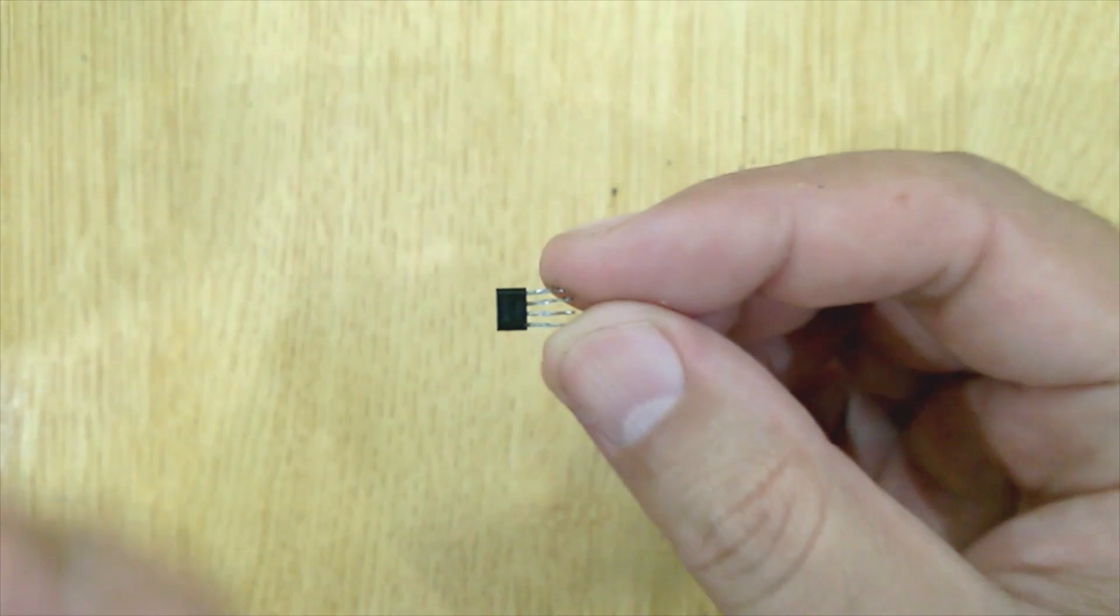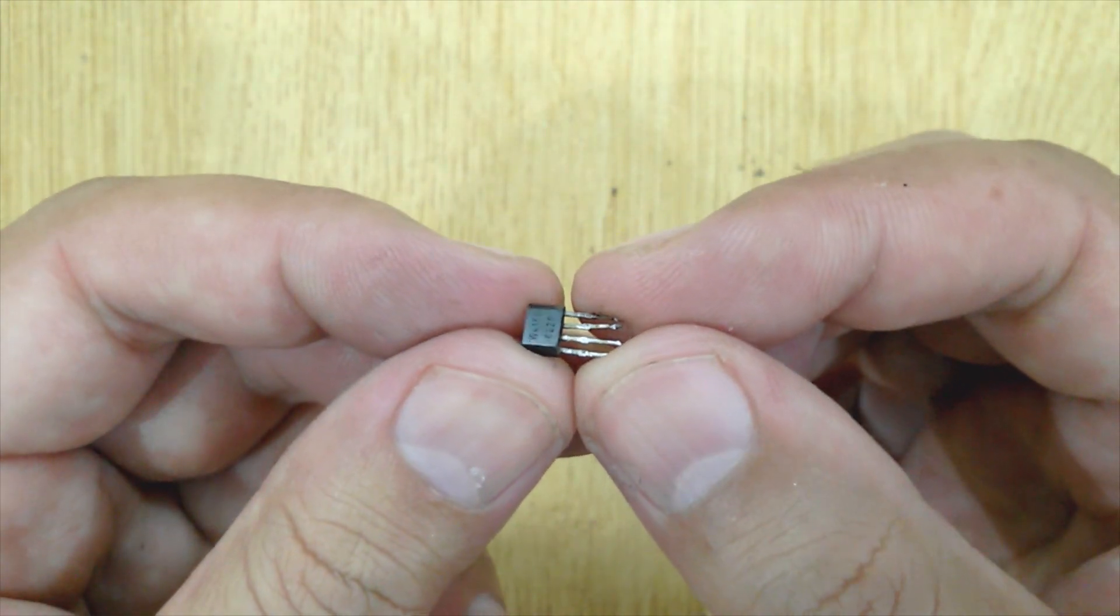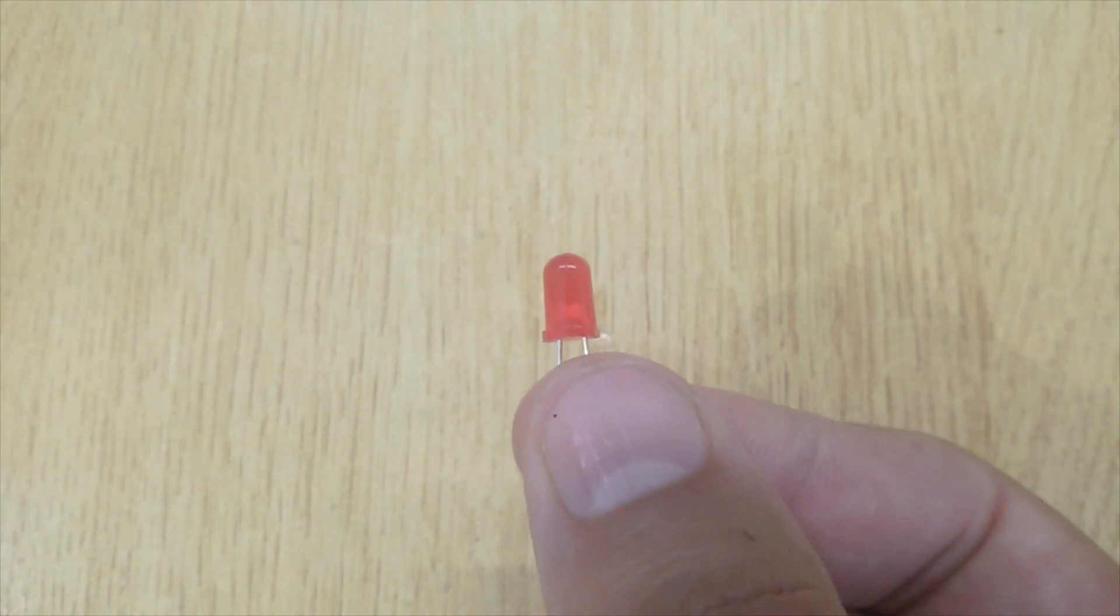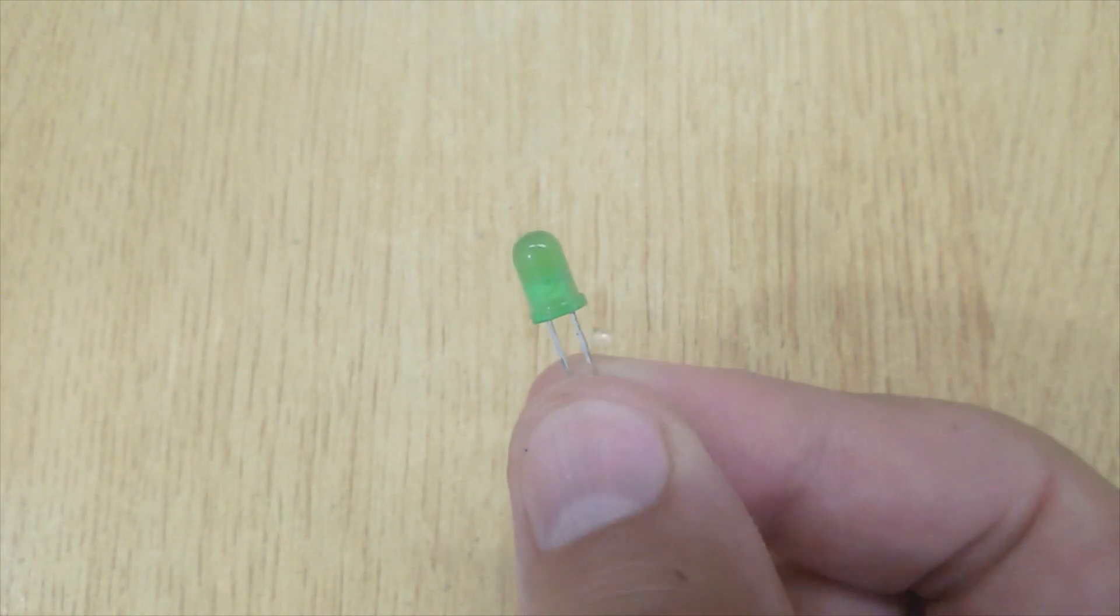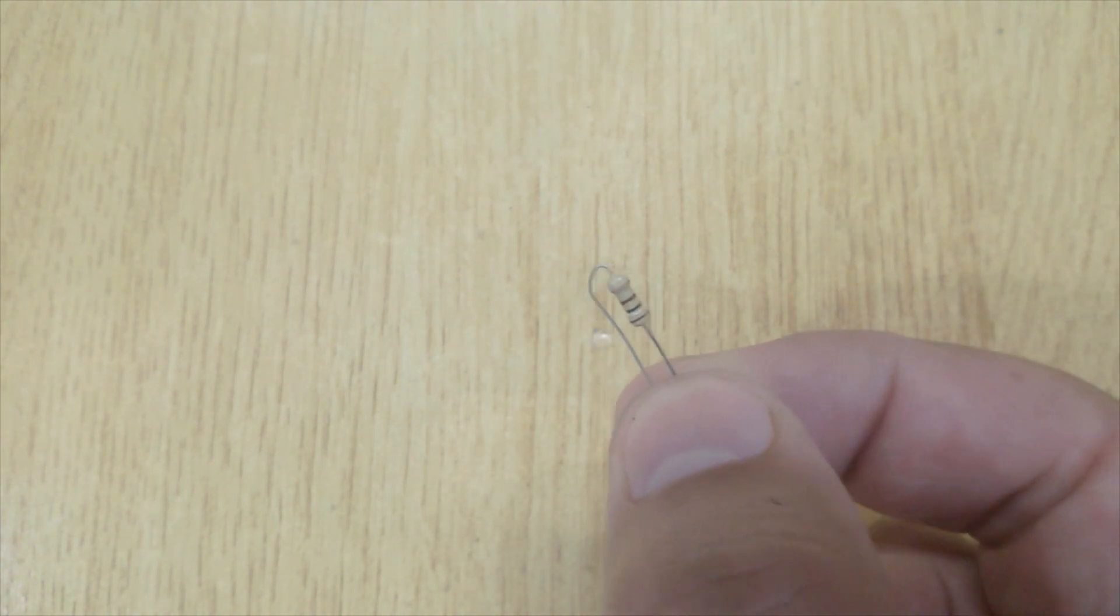After getting the hall effect sensor we will need these electronic components: red LED, green LED, and 100 ohms resistor.